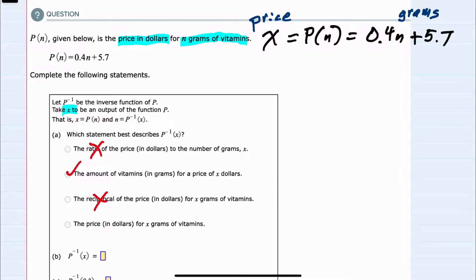For question B, we're asked to find the inverse function, which will be P inverse of x. To find that inverse function, we know that x equals 0.4n plus 5.7.